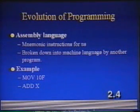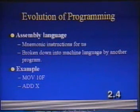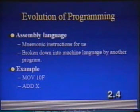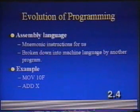Mnemonic instructions that we can learn very easily are then broken down into machine language for us, so we don't have to program that whole set of ones and zeros. An example would be 'move 10f' and 'add x'. These are mnemonic instructions that we can use to give to an assembler, which will then break it down into the appropriate zeros and ones for us.